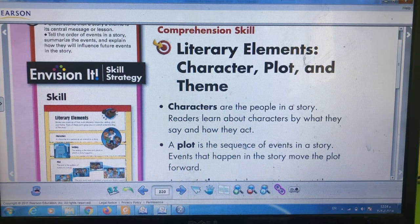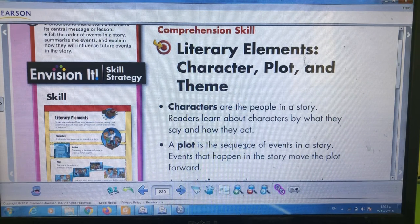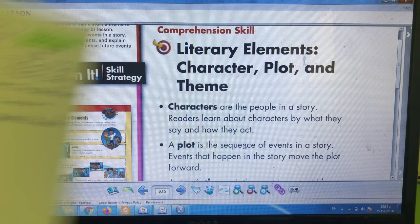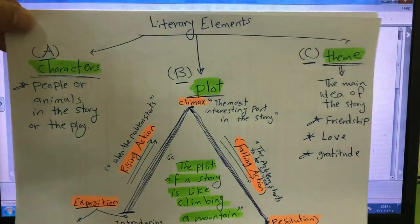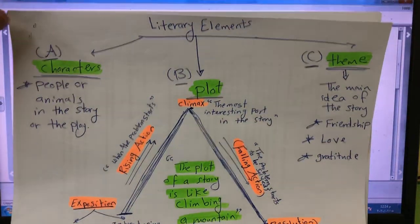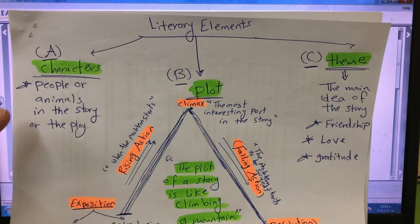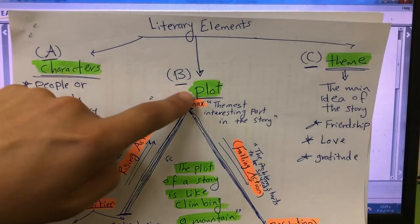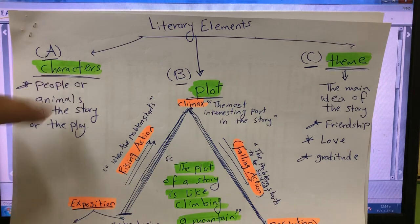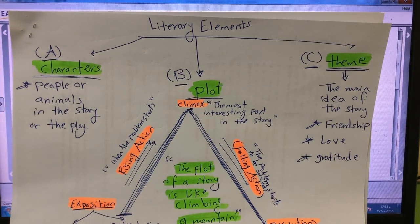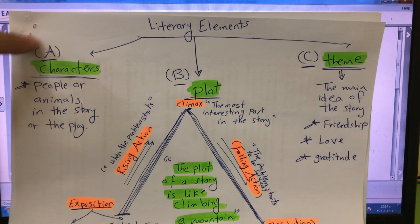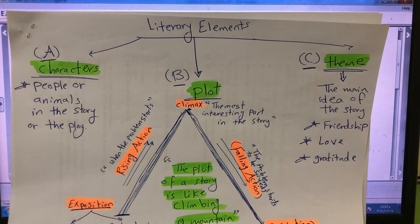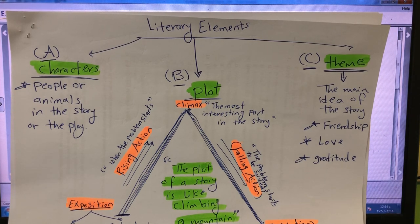Let's start with the first part: the literary elements, which are divided into character, plot, and theme. Look here on the page — the literary elements have three parts: the characters, the plot, and the theme. The first part is about the characters, which are the people or animals in the story or in the play. You can find names for persons and names for animals in your story or play — these are the characters.